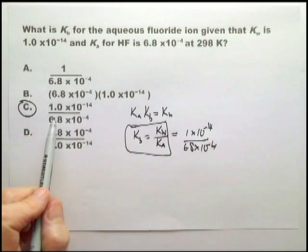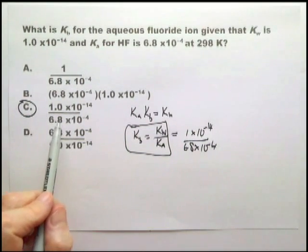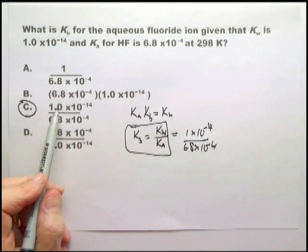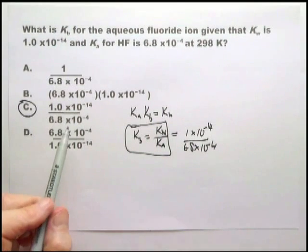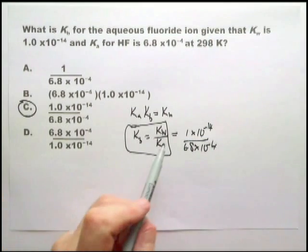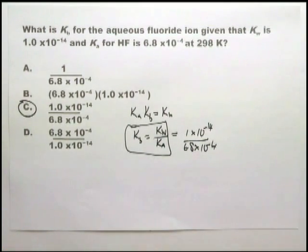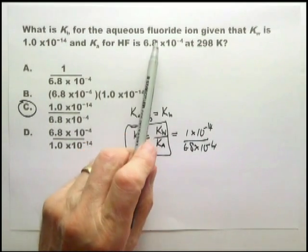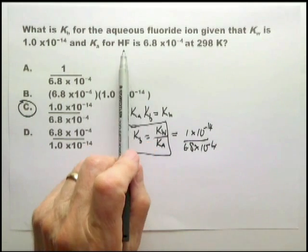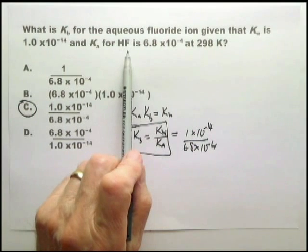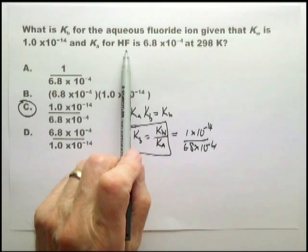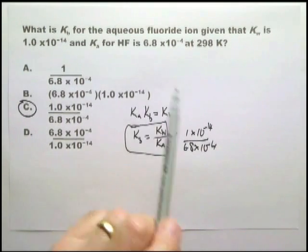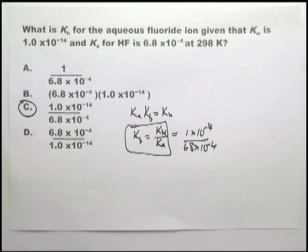So this is a question that can be done in 10 seconds. You simply look for Kw on the top line. If there were two of them with Kw on the top line, you would then check that Ka is on the bottom line. You don't even have to understand quite what they mean by an aqueous fluoride ion has a Kb and HF has a Ka.